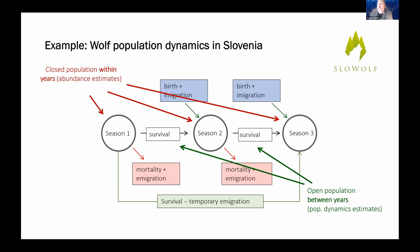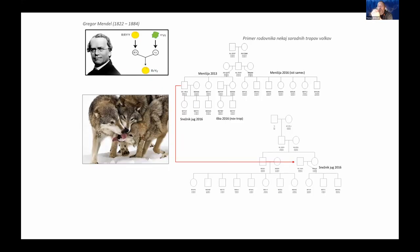The next example is wolf monitoring in Slovenia. This study was designed from the ground up as long-term monitoring, estimating population size in each yearly session and estimating population dynamics between sessions. We cannot disentangle mortality and immigration directly, but we can use genetics to reconstruct pedigrees and disentangle immigration from reproduction — identifying animals that were actually born in our country.